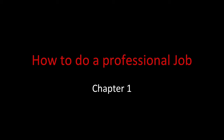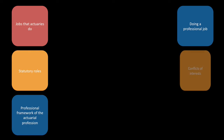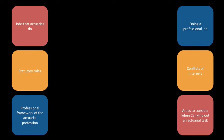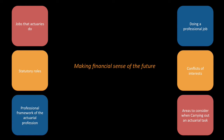Chapter one: how to do a professional job. In this chapter, we're going to look at the jobs that actuaries do, their statutory roles, the professional framework, doing a professional job, conflicts of interest, and areas to consider when carrying out an actuarial task. There's quite a lot more, but we're just going to focus on these six areas due to workload.